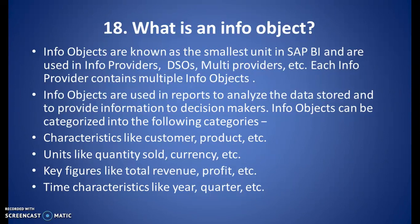What is an info object? Info objects are known as the smallest units in SAP BI and are used in info providers, DSOs, multi-providers, etc. Each info provider contains multiple info objects. Info objects are used in reports to analyze data and to provide information to decision makers.